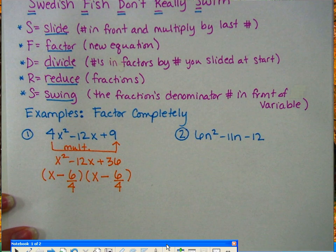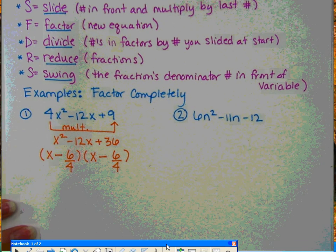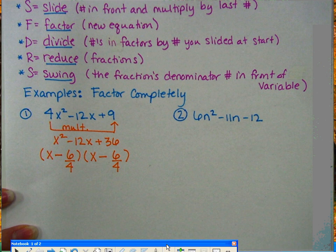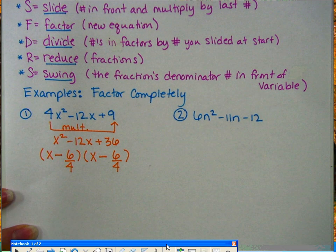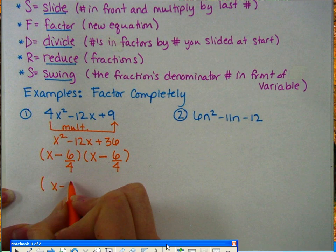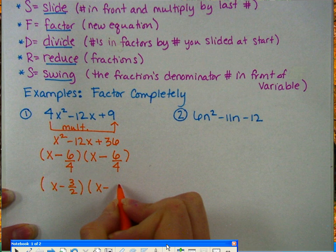Now that we've divided them by 4, the next step is to reduce. And you're reducing your fractions that we just made. So 6 over 4 reduces into 3 over 2. So now we have x - 3/2. And this is also x - 3/2.